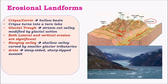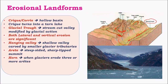An arête is a ridge which is formed due to erosion on both sides of a peak or ridge. As erosion becomes intense on both sides, a lot of glacial debris is removed, and the center region which is not eroded remains as a ridge called an arête. When this arête is eroded on multiple sides, it gives rise to a structure called a horn, which resembles a peak.